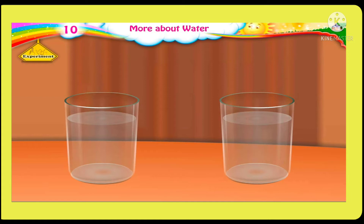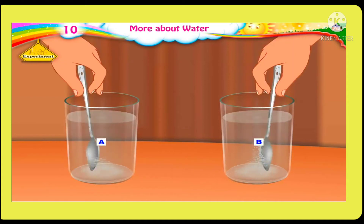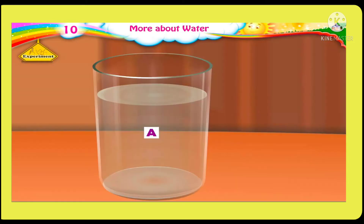Take two glasses filled with water and label them A and B. Add a spoonful of sugar in glass A and rangoli in glass B. Now stir the water in both glasses with a spoon. What do we see?